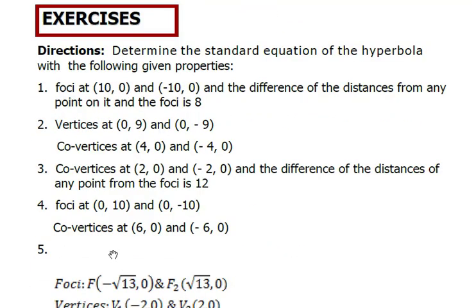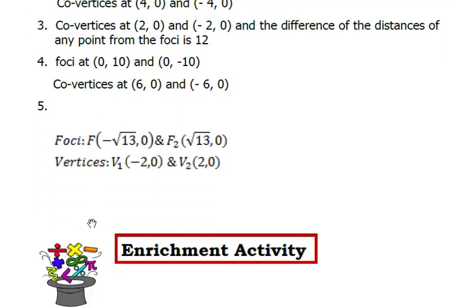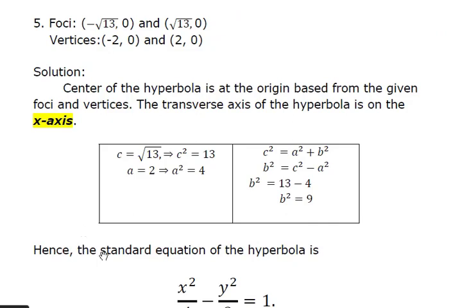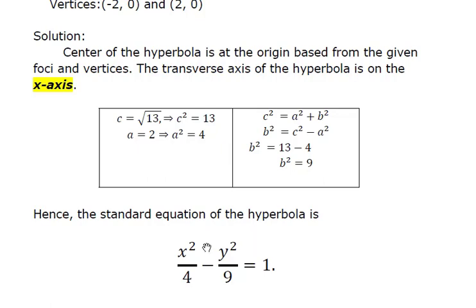Exercise number 5: foci at (-√13, 0) and (√13, 0), vertices at (-2, 0) and (2, 0). The transverse axis is on the x-axis. From the foci, c equals √13 and c-squared equals 13. From the vertices, a equals 2 and a-squared equals 4. Then b-squared equals c-squared minus a-squared, which is 13 minus 4 equals 9. Hence, the standard equation is x-squared over 4 minus y-squared over 9 equals 1.